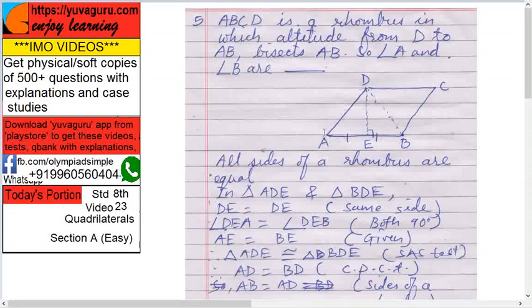DE bisects AB, so that's why given. So triangle ADE congruent to triangle BDE. Why? SAS test, right?